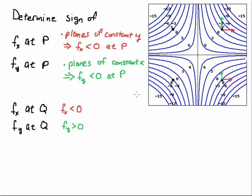Similarly, if I look in the positive Y direction — along the constant X direction — then I would see that I would be increasing. That means F sub Y is greater than zero, so it is positive. And that's a geometric viewpoint of partial derivatives by observing the contour maps.